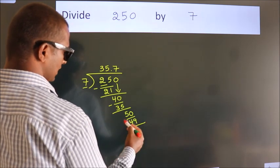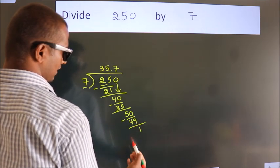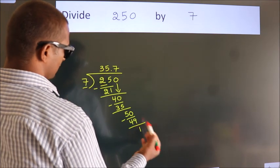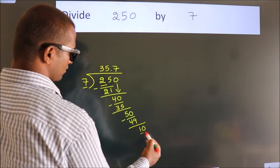Now we subtract. We get 1. After this, we already have the decimal, so directly take 0. So 10.